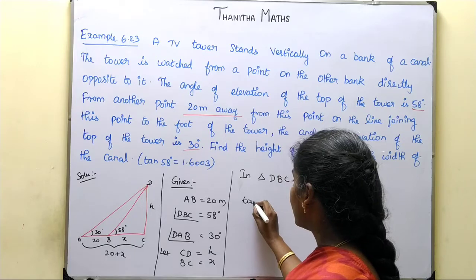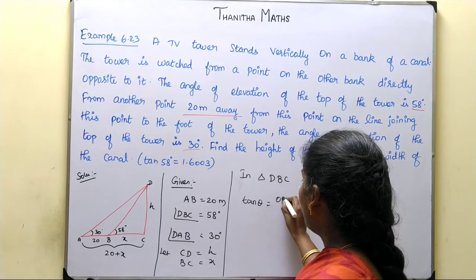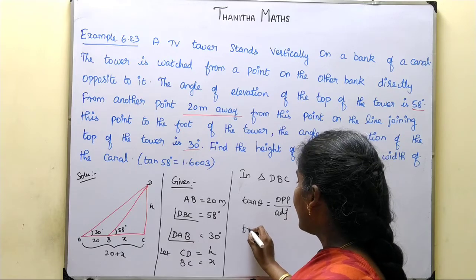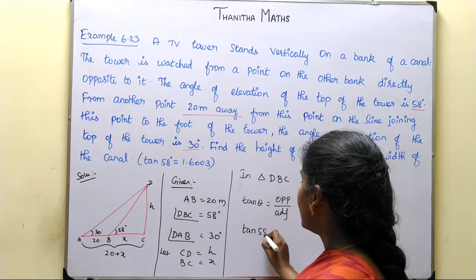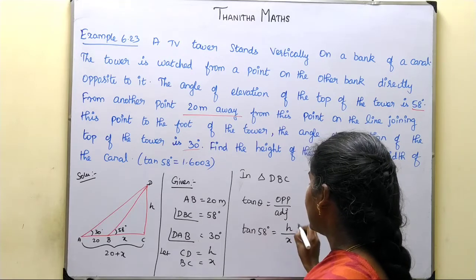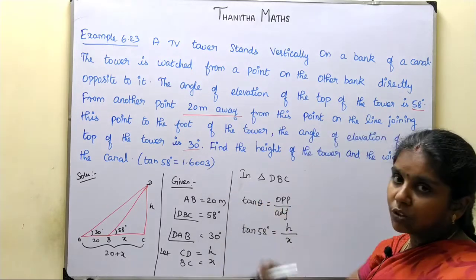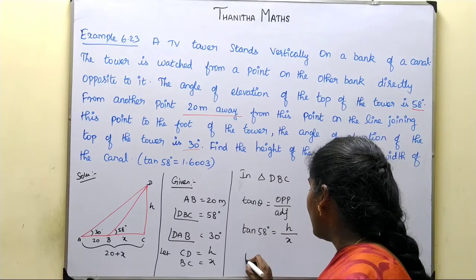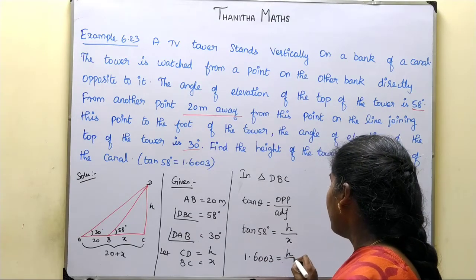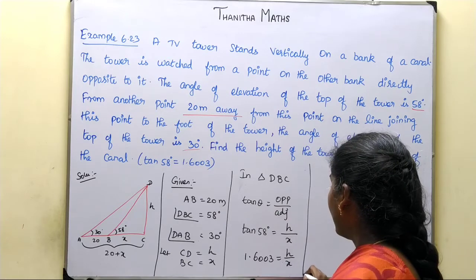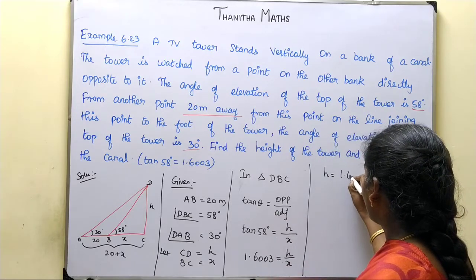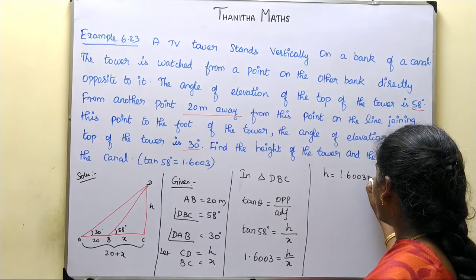In triangle DBC, tan theta equals opposite side by adjacent side. So tan 58 degrees equals h divided by x. The value of tan 58 is 1.6003. Therefore 1.6003 equals h by x, which gives us h equals 1.6003x.